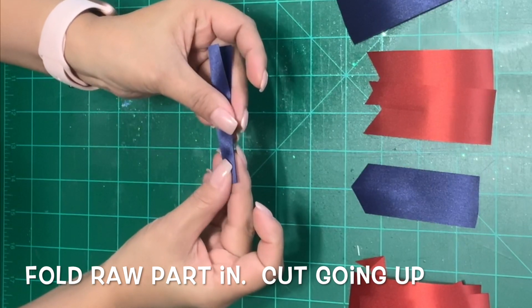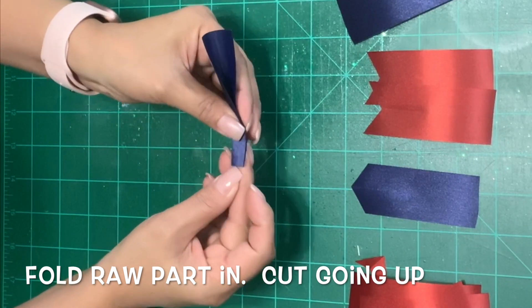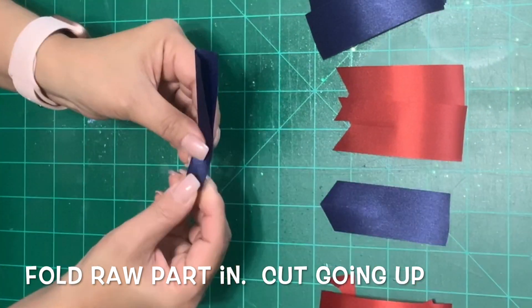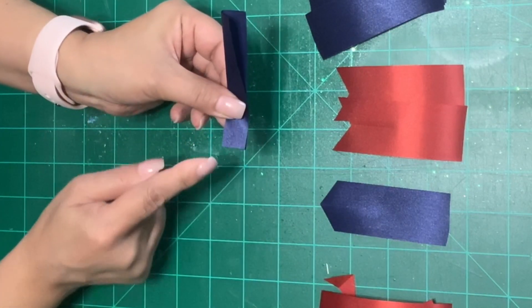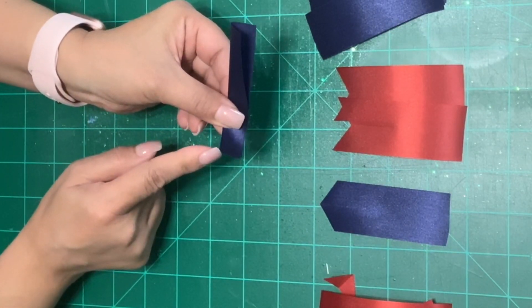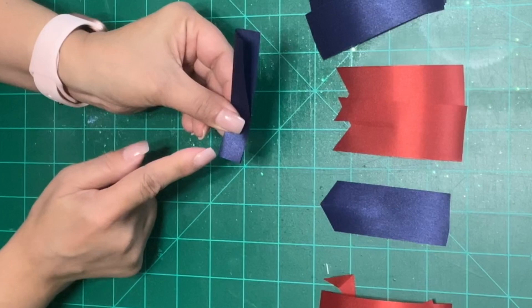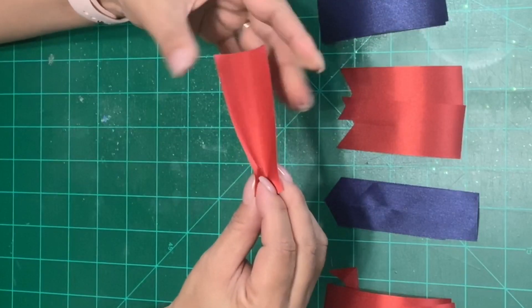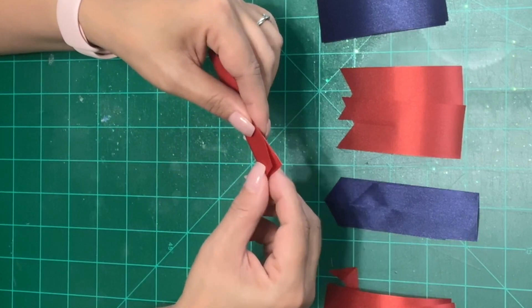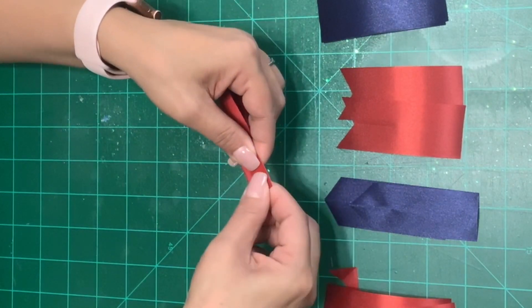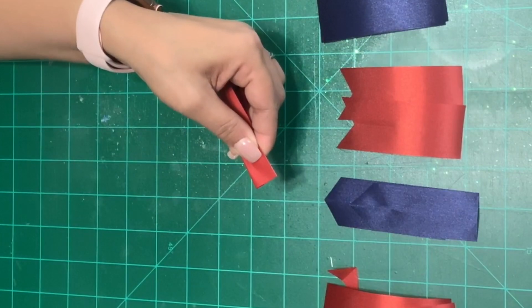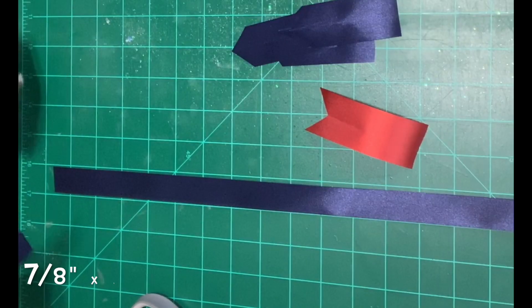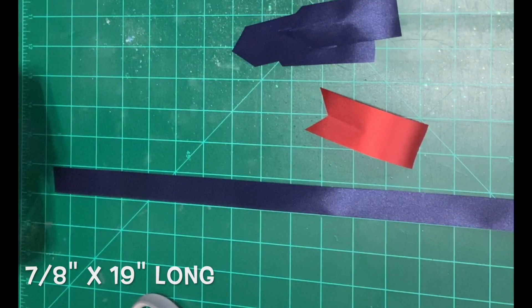For the blue one we're going to be folding the raw side in folding it in half lengthwise. Now we're going to be cutting starting from the bottom left we're going to be cutting a diagonal line going up and it'll make an arrow going down. Now finish cutting all those other strips. The blue ones will be cut the way we cut the blue and the orange ones will be cut the way we cut the orange one. For your base cut a 7/8 inch by 19 inch long blue ribbon.